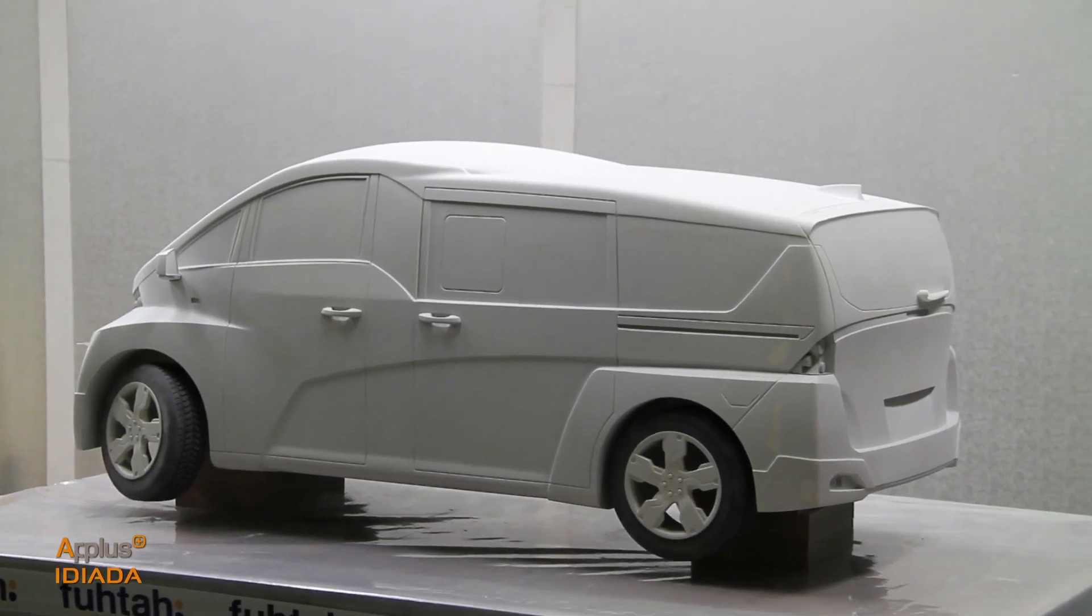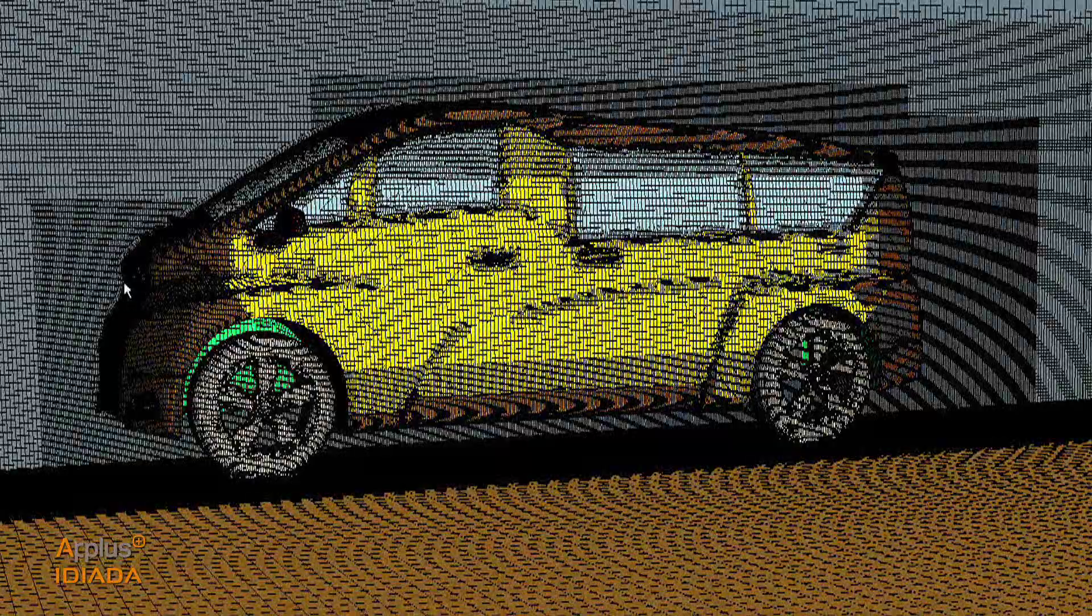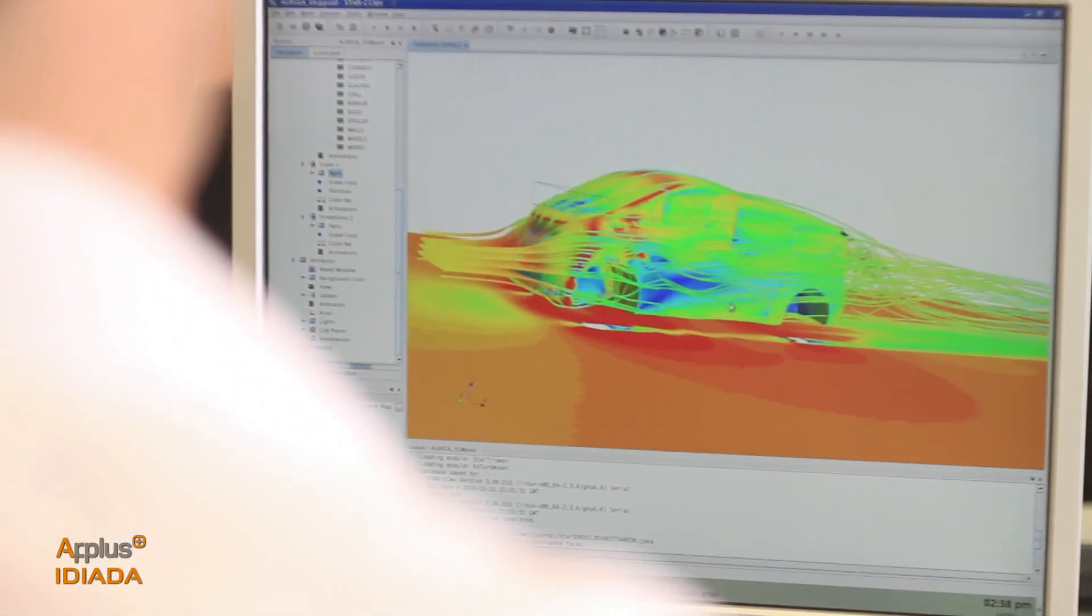In order to optimize the energy efficiency of the E-BORN3, the main volume shapes have been analyzed in depth by means of computational fluid dynamic simulation. Additionally, CFD simulation has been used to minimize noise sources produced by external vehicle projections.